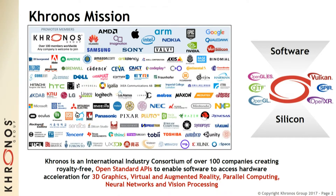If you haven't come across Khronos before, we're an open standards consortium of about 140 companies right now — everyone from Google and Apple all the way down to small one-person startup companies. We really welcome participation because Khronos is the place where the industry can come to work together with 140 of your closest competitors to create open standards that are good for your company and good for the industry.